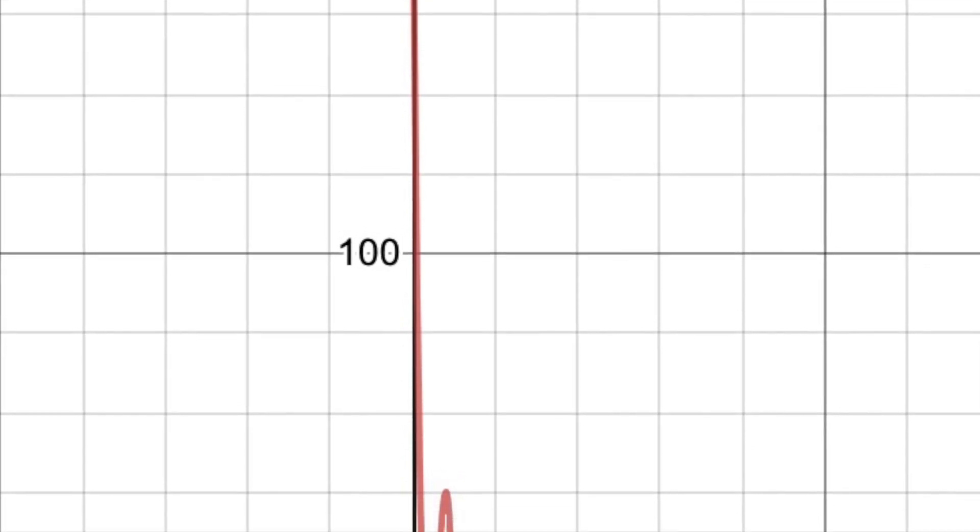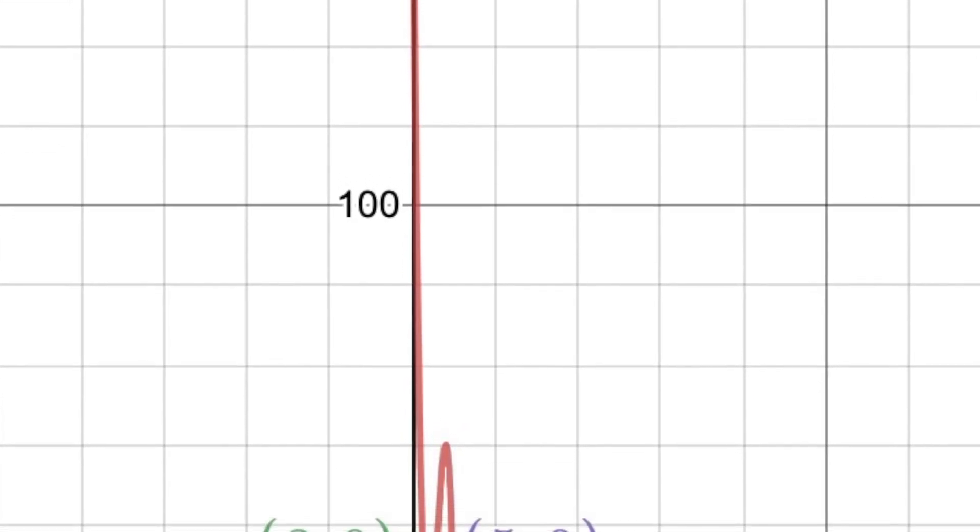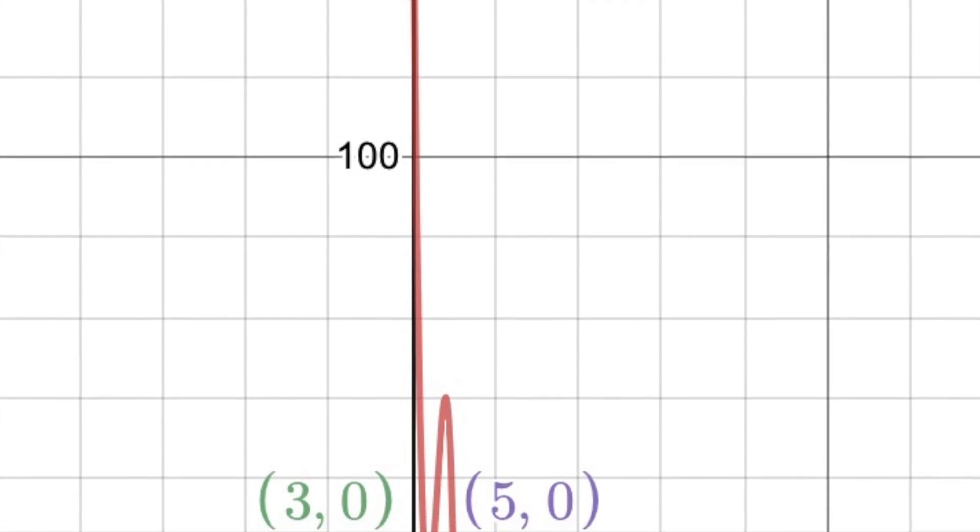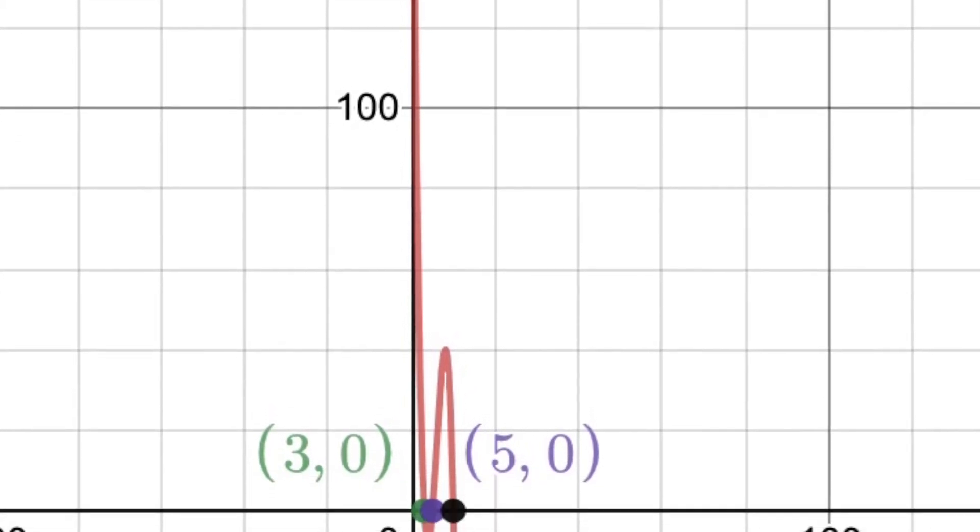We know that the coaster must pass ground level at 3 seconds, 5 seconds, and 10 seconds. These correspond to the points (3, 0), (5, 0), and (10, 0). These are the x-intercepts of the function.